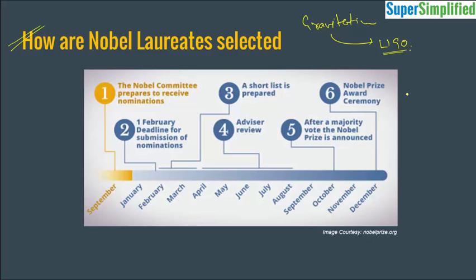To understand the reason, you should know how Nobel laureates are selected. The process begins in September when the Nobel Committee prepares to receive nominations, and nominations are received until 31st January — that is the deadline. After that, a shortlist is prepared. All nominations are scrutinized, then a review happens on the shortlisted candidates' thesis and scripts. And then the prizes are announced in October every year and given away in December.